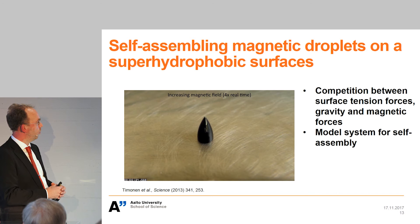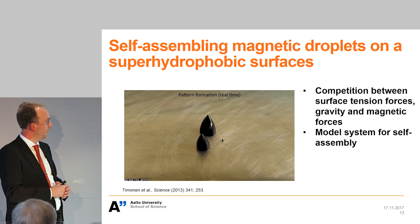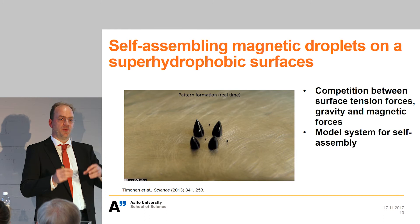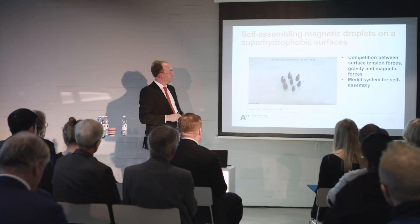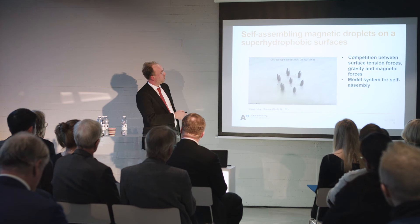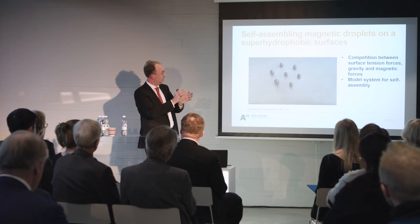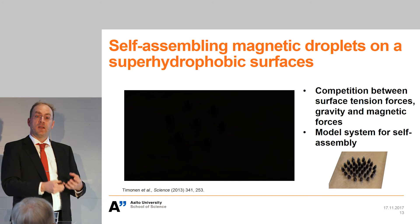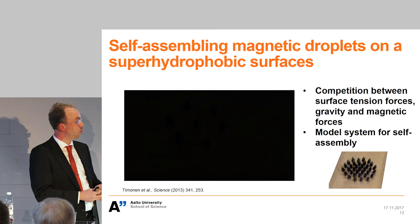Each smaller droplet becomes a magnet by itself. As you know from playing with magnets, two magnets can either attract or repel depending on orientation. Here the droplets are magnets that repel each other, and that leads to self-assembly — the droplets form an ordered array. This is used as a model system for self-assembly. When cleaved into many tens of droplets, a very ordered array forms as a competition between local repulsion and global attraction towards the magnet.